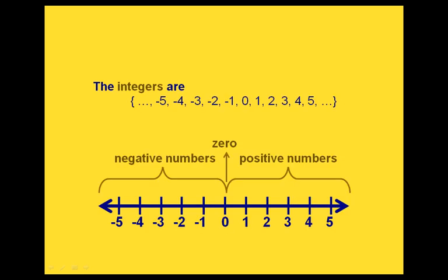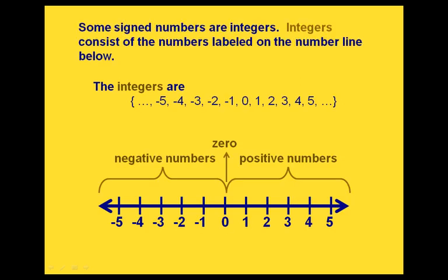So again, here is a whole list of integers. We have everything to the left of zero, everything to the right of zero, and zero itself.